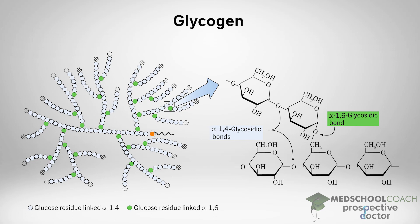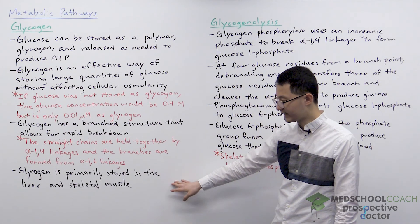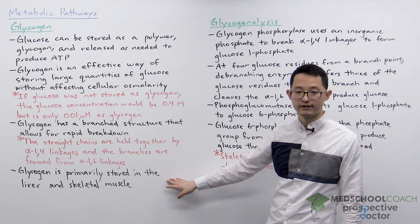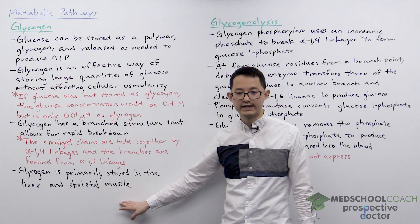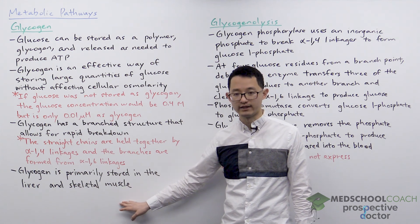In this diagram you can see the different linkages that hold the glucose monomers together. There are alpha-1,4 linkages for the straight chains of glycogen and alpha-1,6 linkages for the branch points in glycogen. Finally, you should also know that glycogen is primarily stored in the liver and skeletal muscle in the body.